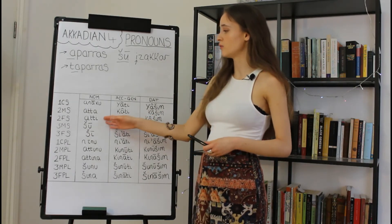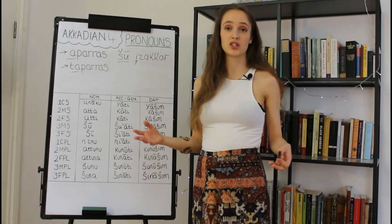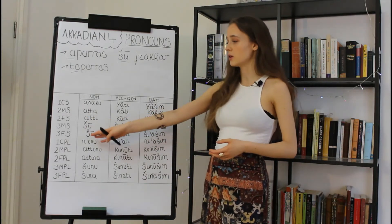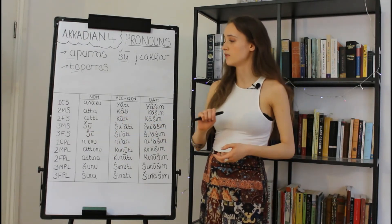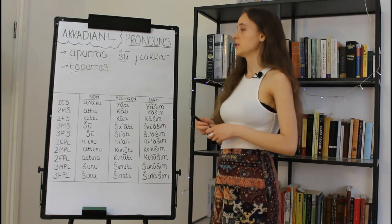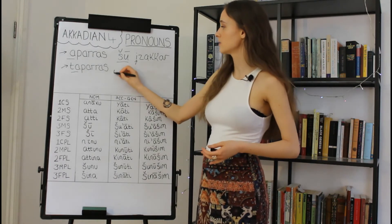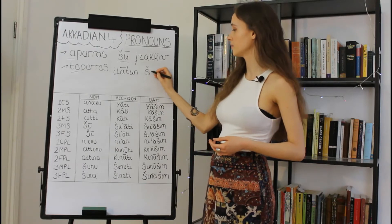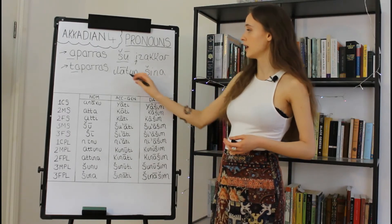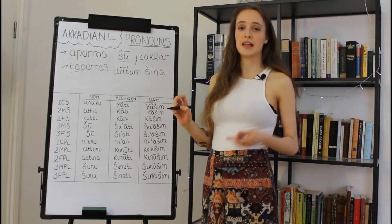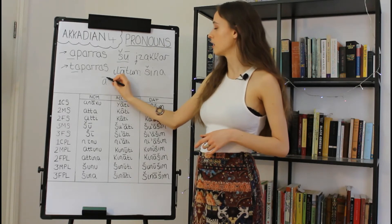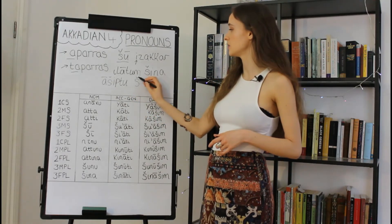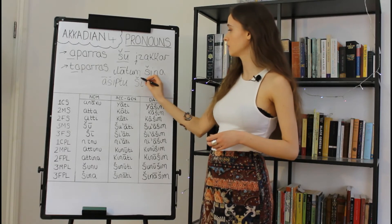Another occasion where nominative pronouns pop up is as demonstrative adjectives — words like that, those, these, etc. We only use the third person nominative pronouns for demonstrative adjectives. For example, to say 'these goddesses' we could say 'elātum šīna,' where 'elātum' is the word for goddesses and 'šīna' is the third feminine plural nominative pronoun. Or to say 'that which,' you could say 'aštû šī,' where 'šī' is the third feminine singular independent pronoun.